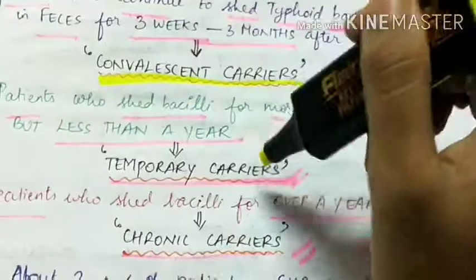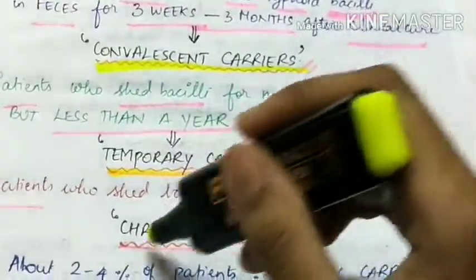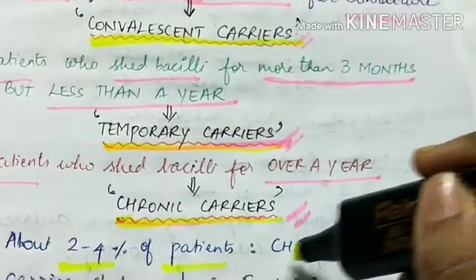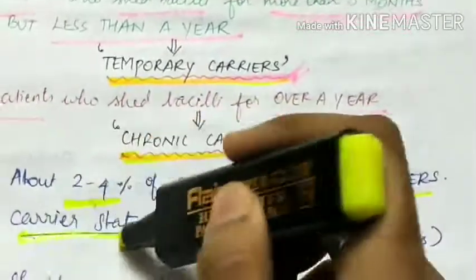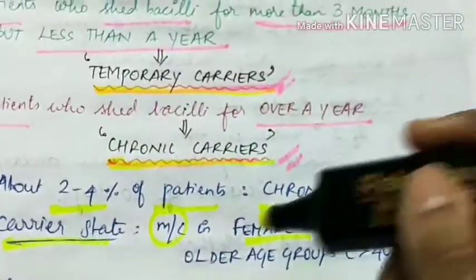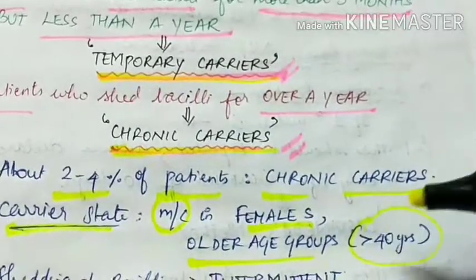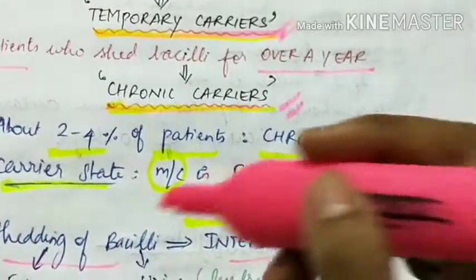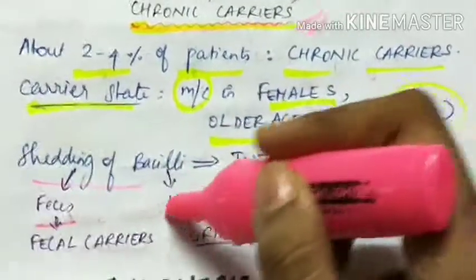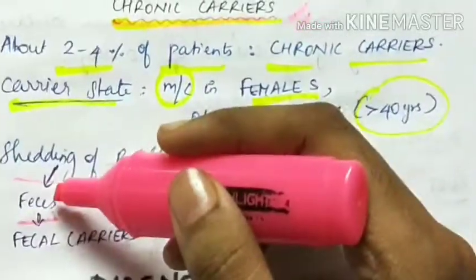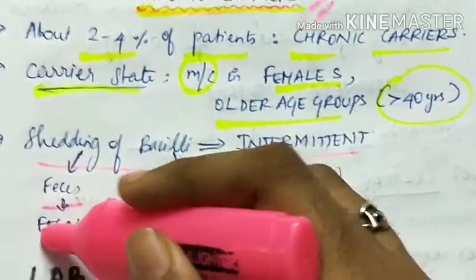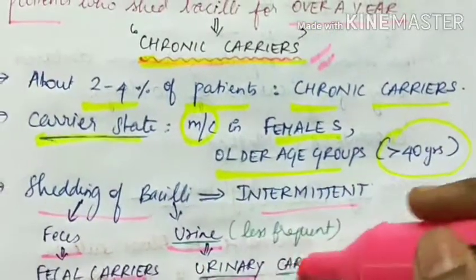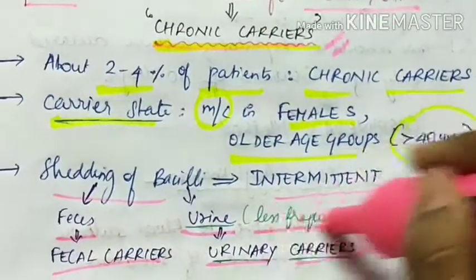About 2 to 4 percent of patients are chronic carriers, and the carrier state is most common in females and in older age groups, that is, those over 40 years. The shedding of bacilli is intermittent and can be either in feces or in urine. Patients shedding in feces are called fecal carriers, and those shedding in urine are called urinary carriers, though urinary carriers are less frequent.